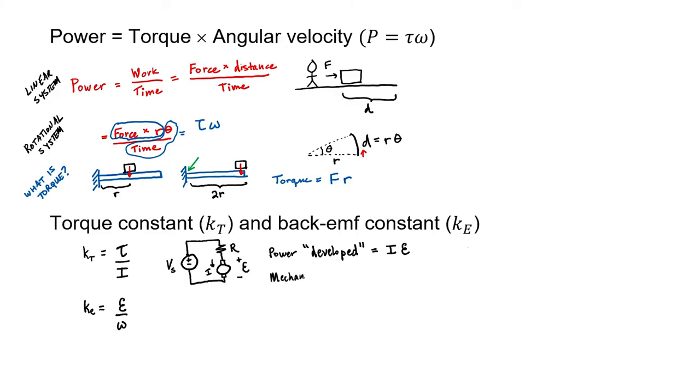It turns out that the torque constant and the back EMF constant are equal to one another. Let me show you why. We know from what we did just above that the mechanical power in a rotational system is just the torque times the angular velocity. I can relate these two powers to one another. The left side of the equation is the back EMF constant and the right side of the equation is the torque constant.